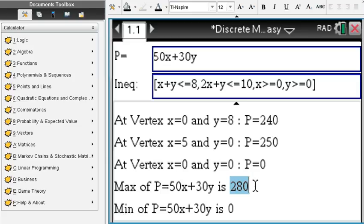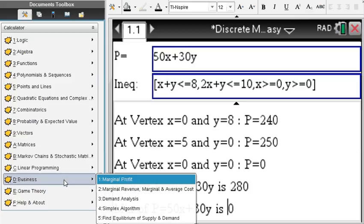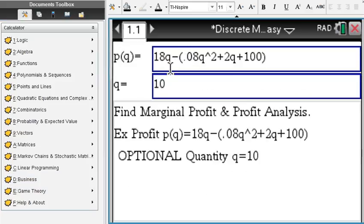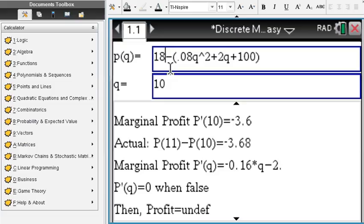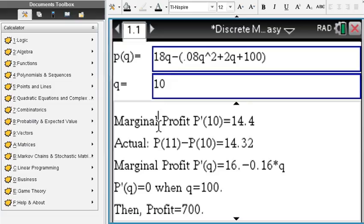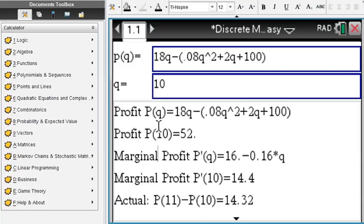Business applications: marginal profit. Enter the price function depending on quantity, and you can compute easily marginal profit, actual profit, etc.